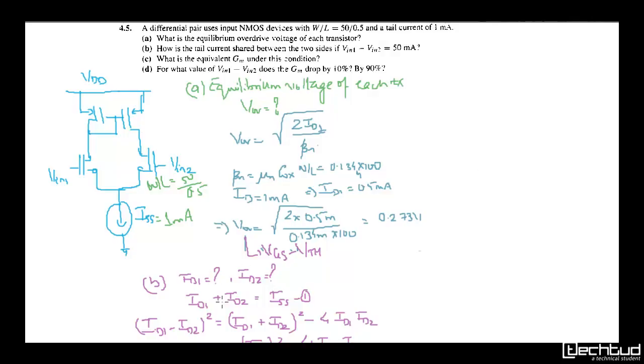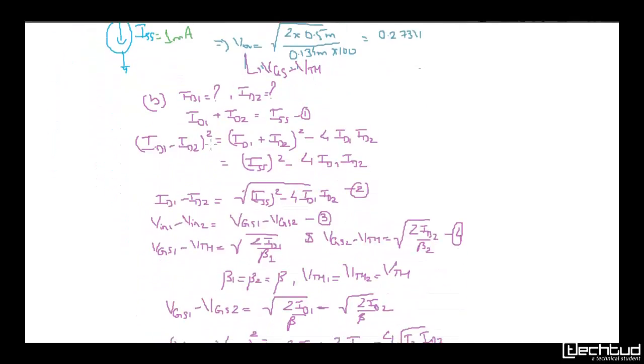To calculate ID1 and ID2, we know the sum is 1mA. If we know the difference ID1 - ID2, we can calculate each current. We can write (ID1 - ID2)² = (ID1 + ID2)² - 4*ID1*ID2, which equals ISS² - 4*ID1*ID2. Therefore, ID1 - ID2 = sqrt(ISS² - 4*ID1*ID2).